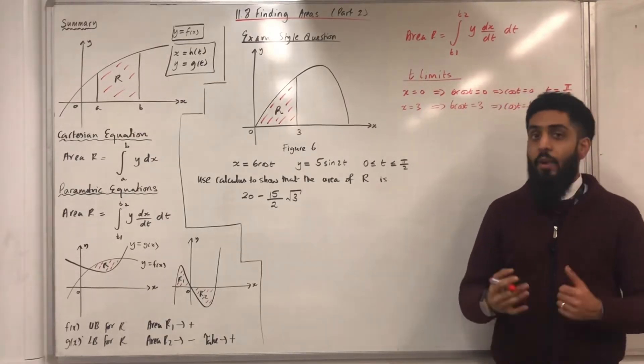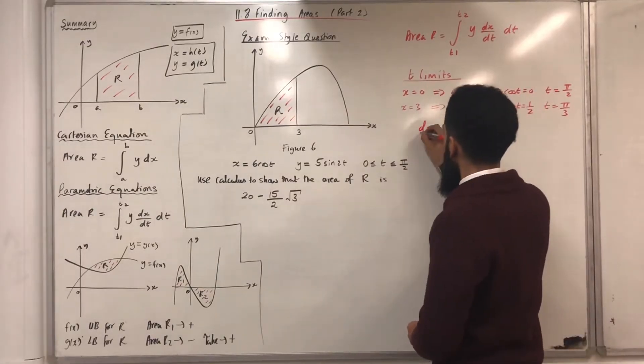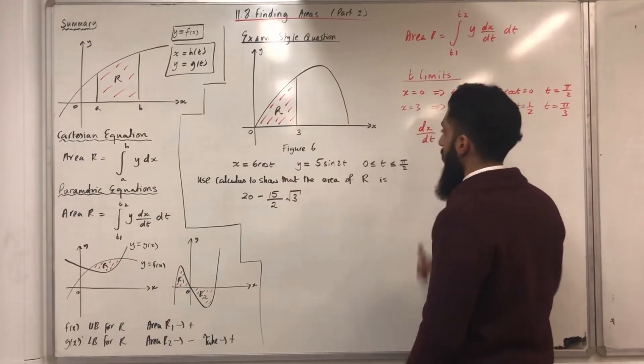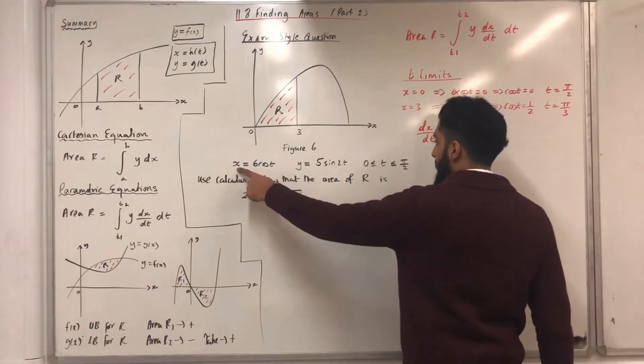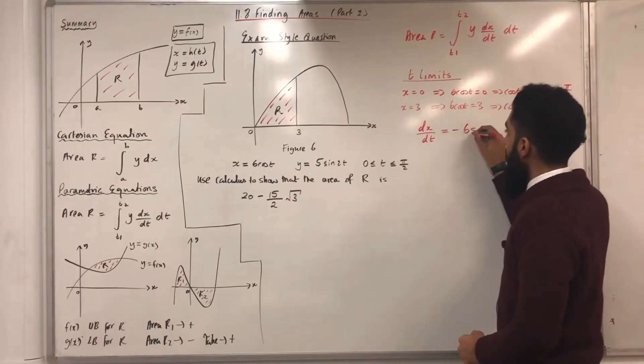Now, I need to work out dx over dt. So, I'm differentiating x with respect to t. And if I do that, I get minus 6 sin t.